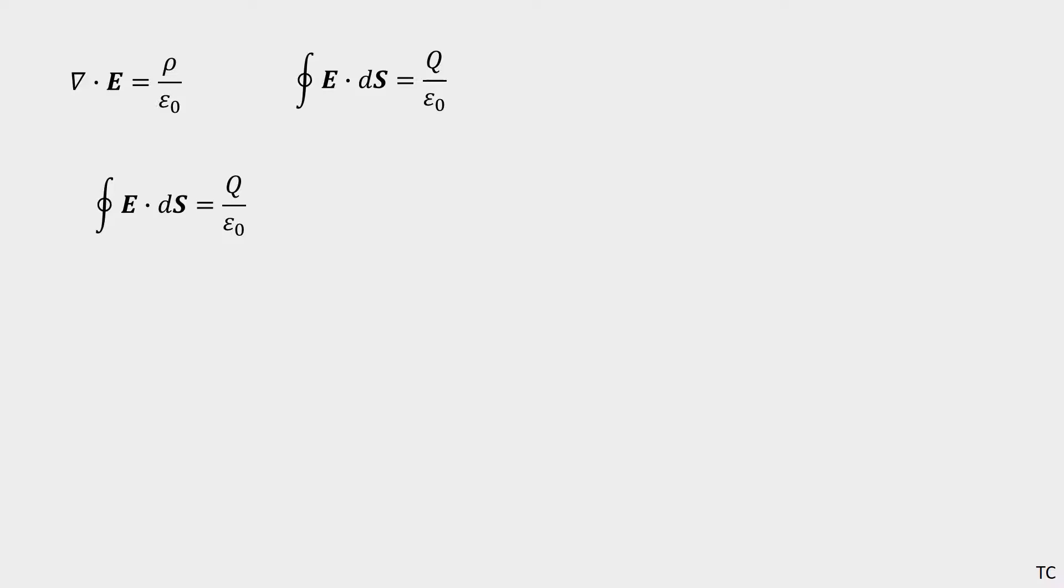What you want to do is get your vector electric field into something more of a scalar that's constant over the surface you've chosen, which is commonly referred to as the Gaussian surface.